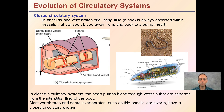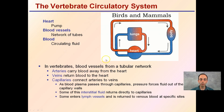Most vertebrates and some invertebrates, such as the earthworm pictured here, have a closed circulatory system. In more detail, such as in birds and mammals, the system consists of a heart, which is the pump, blood vessels, which are the networks of tubes, and blood, which is the actual circulating fluid.